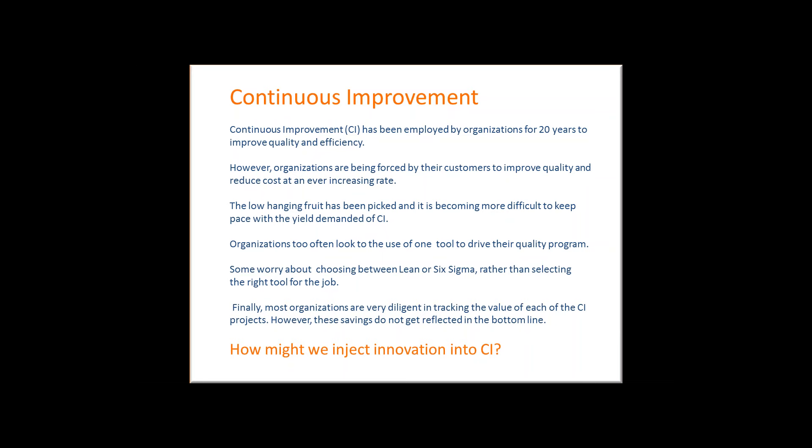Often an organization will have one tool — we're a Six Sigma place, or we're a lean place. They worry too much about which one to use, rather than asking what problem they're trying to solve, which opens up everything. We should be looking at the bottom line for our projects — how do they connect strategically across the whole organization? Bottom line: how do we inject innovation into continuous improvement?